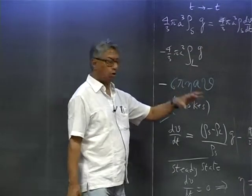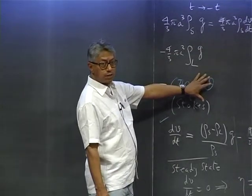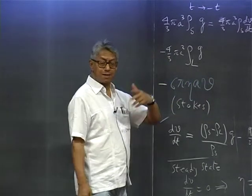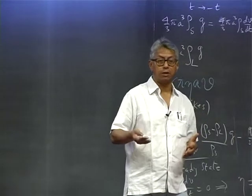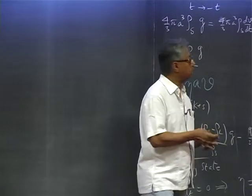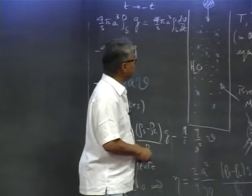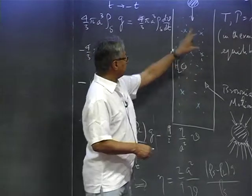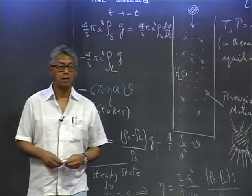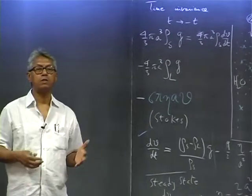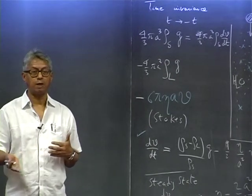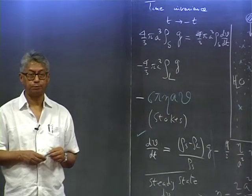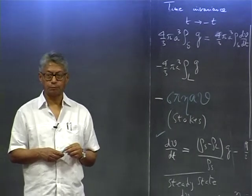The system is dissipative because if you look at the energy, it is not conserved. The ball is gaining energy from the surrounding through this viscous force, through the collisions with the surrounding particles. In statistical physics, you talk about a subsystem and a surrounding heat bath. The ball is a subsystem and the water jar is a heat bath; there is energy transfer between the subsystem and the bath, and in that sense the system is dissipative.